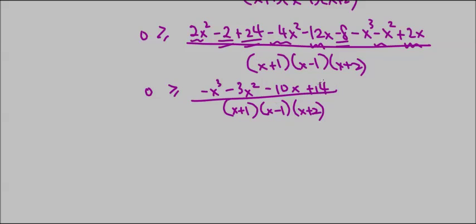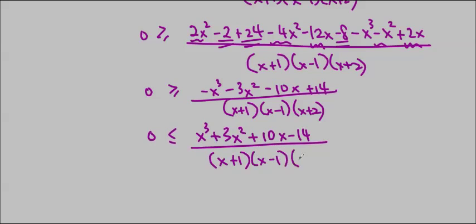So now I can collect like terms. I'll get 0 is greater than or equal to negative x cubed minus 3x squared minus 10x plus 14. Don't forget to write your LCD at the bottom. Now that I have that, some people like to get rid of this negative, and if you want to, you can multiply everything by negative 1 here. But if you do that, you have to multiply the other side by negative 1, and you have to change the sign. So I'm going to go ahead and do that. But you don't have to do that. This is a totally optional step. Personally, for me, I like to solve polynomials where the leading coefficient is positive.